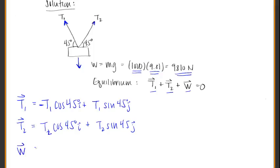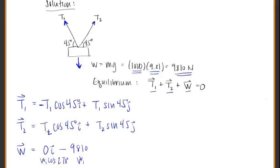For the weight vector, it's just straight down — no x component. So it's 0 times i. Since it's going down, that's 270 degrees, and sine of 270 degrees is negative one, so the y component is negative 9,810 newtons times j.